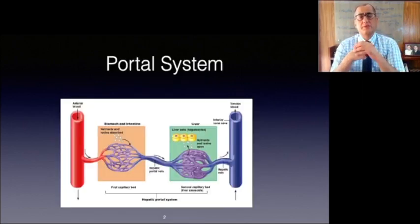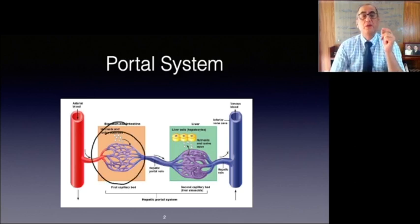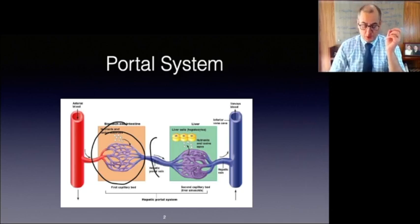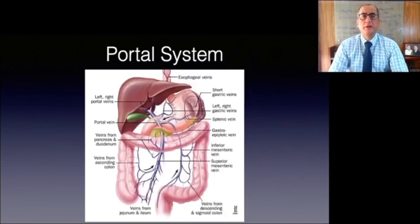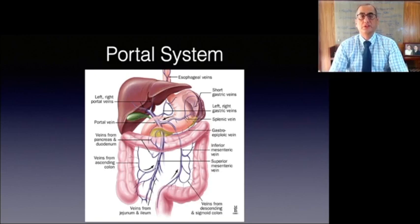So what exactly does the portal system consist of? Simply, it is a system of blood vessels that begins and ends in capillaries. On the left is the capillary of the bowel and on the right is the liver capillary bed, with the portal vein being the conduit. There is another human portal venous system, the hypophysial portal system, which transports hormones from the hypothalamus to the pituitary gland. The hepatic portal system is the venous system that returns blood from the digestive tract and spleen to the liver, where raw nutrients are processed before the blood returns to the heart.